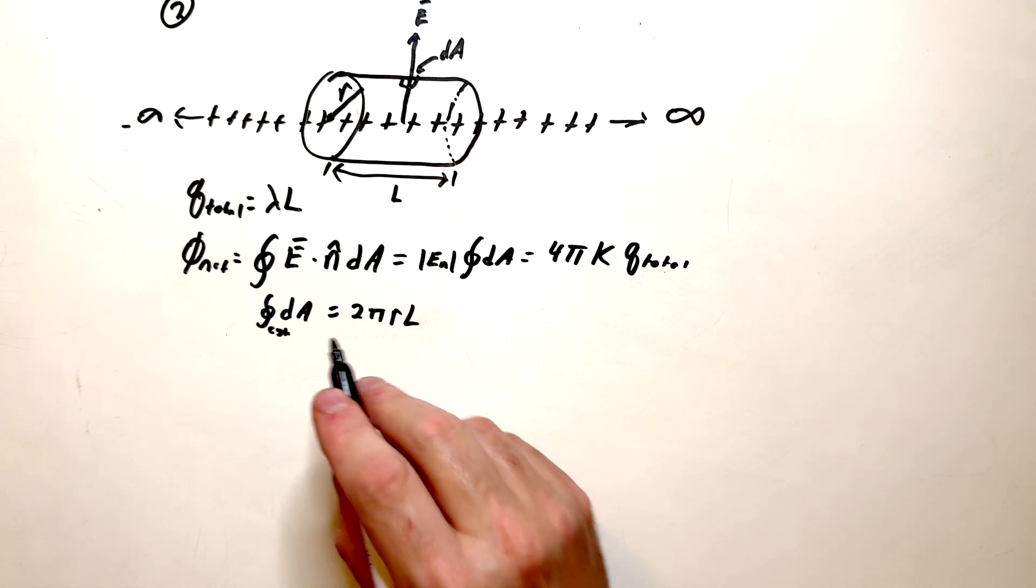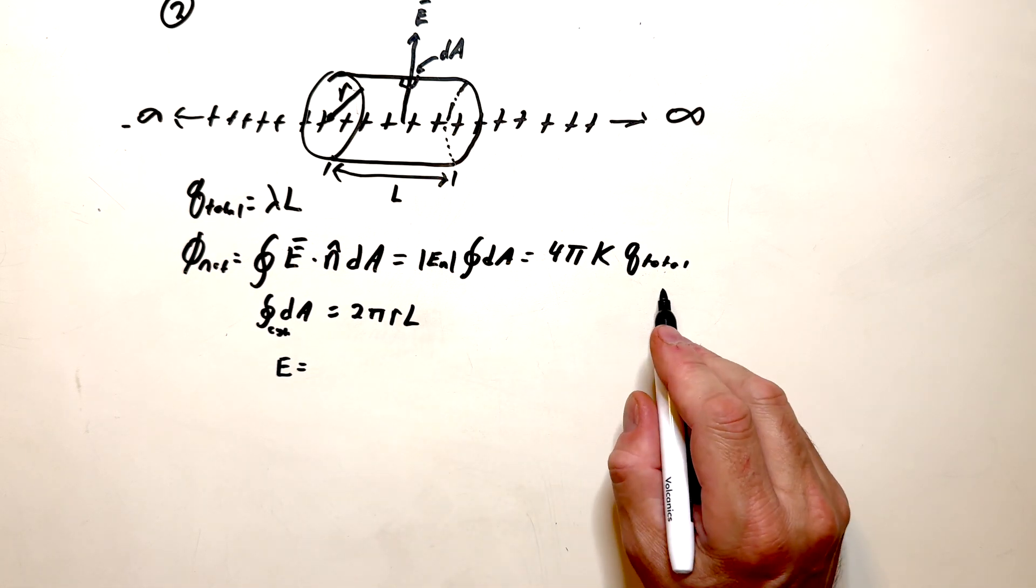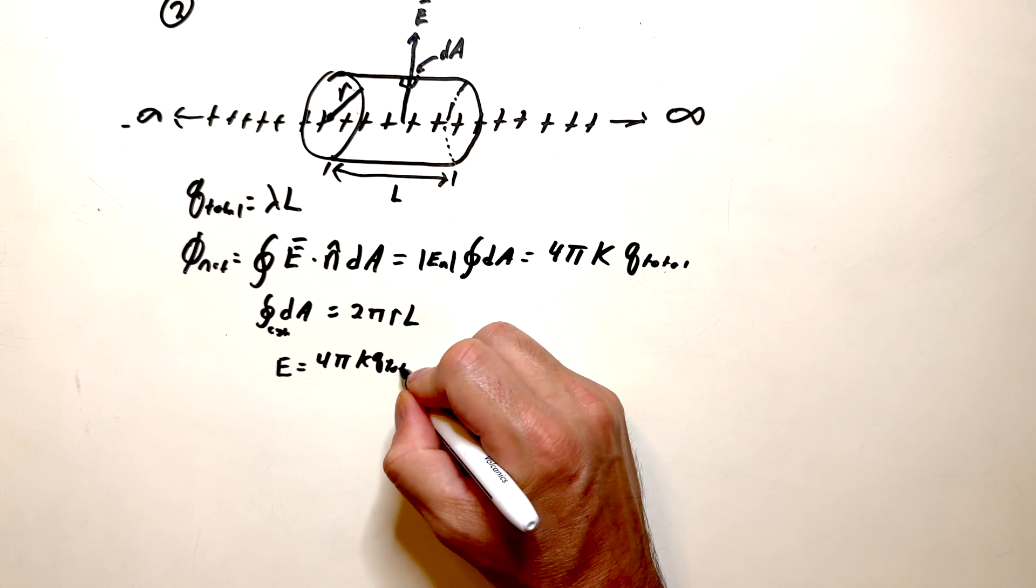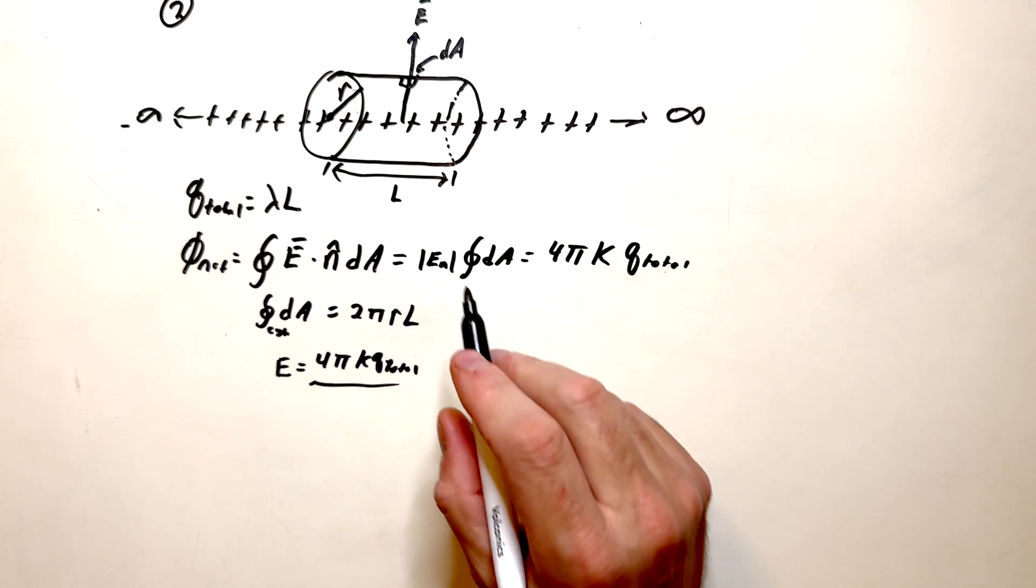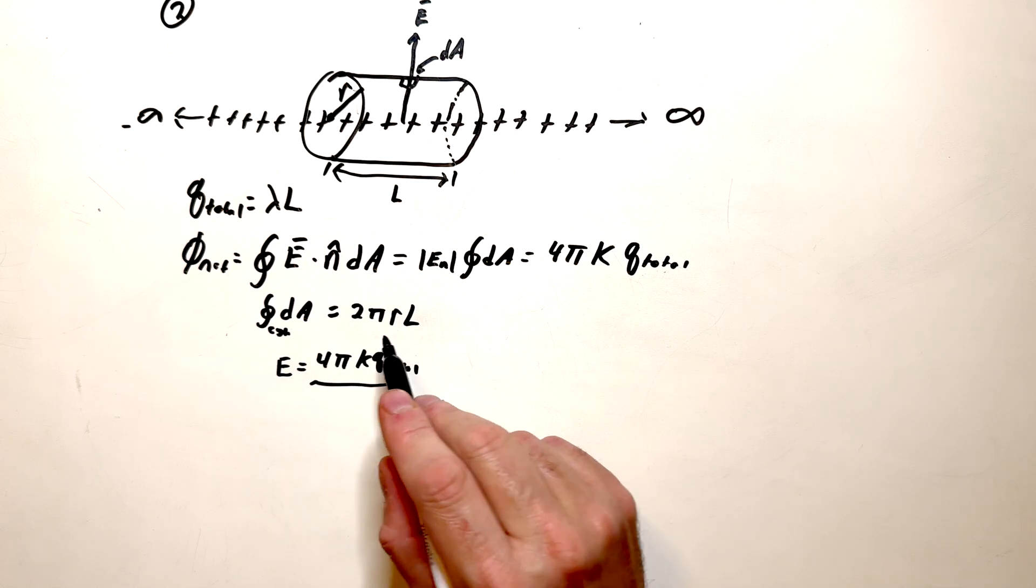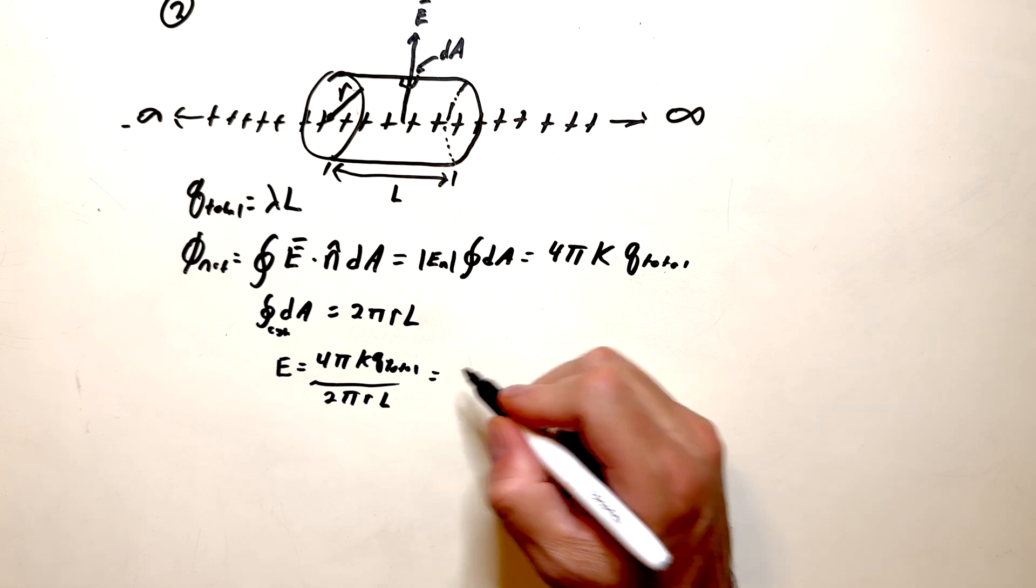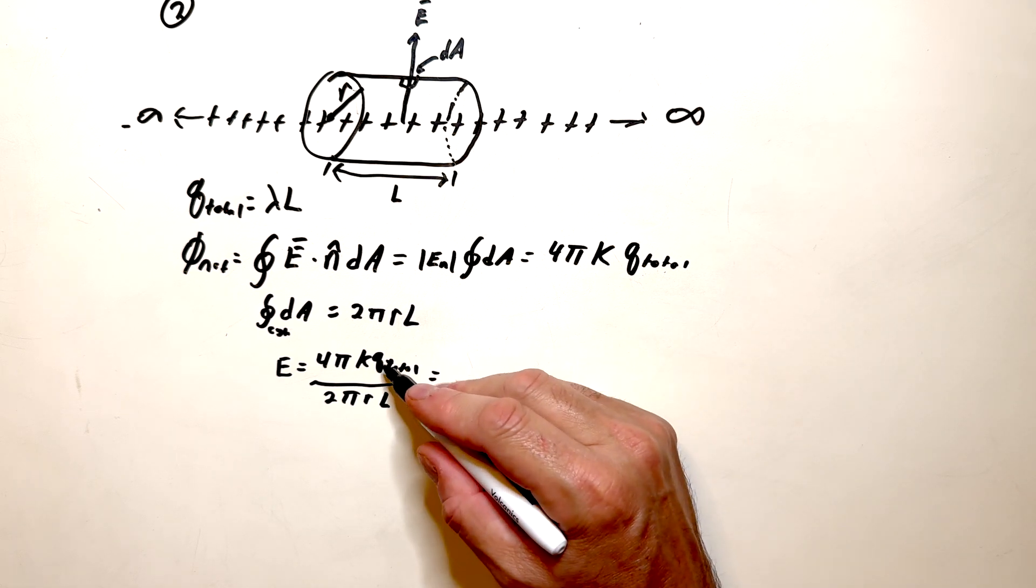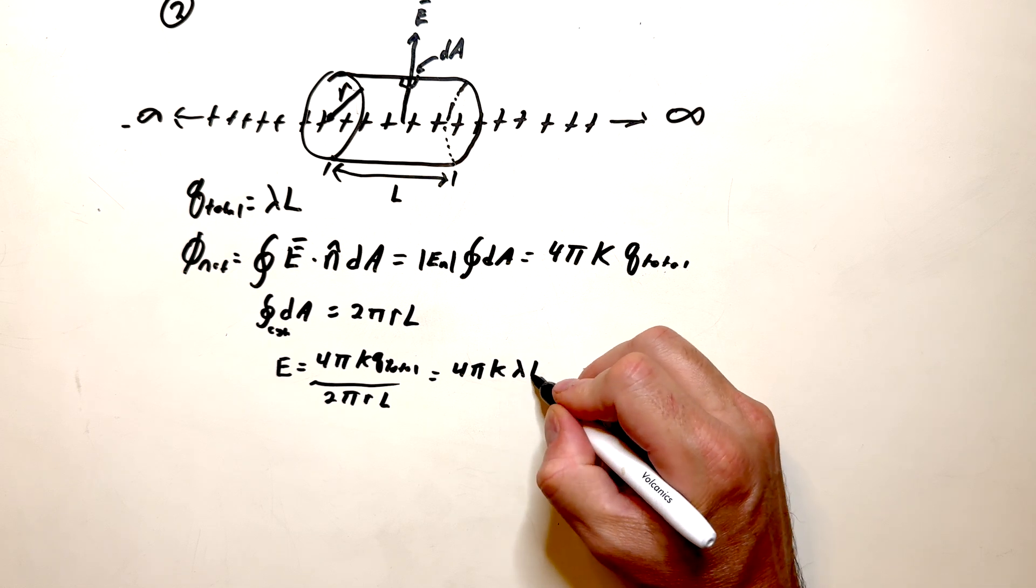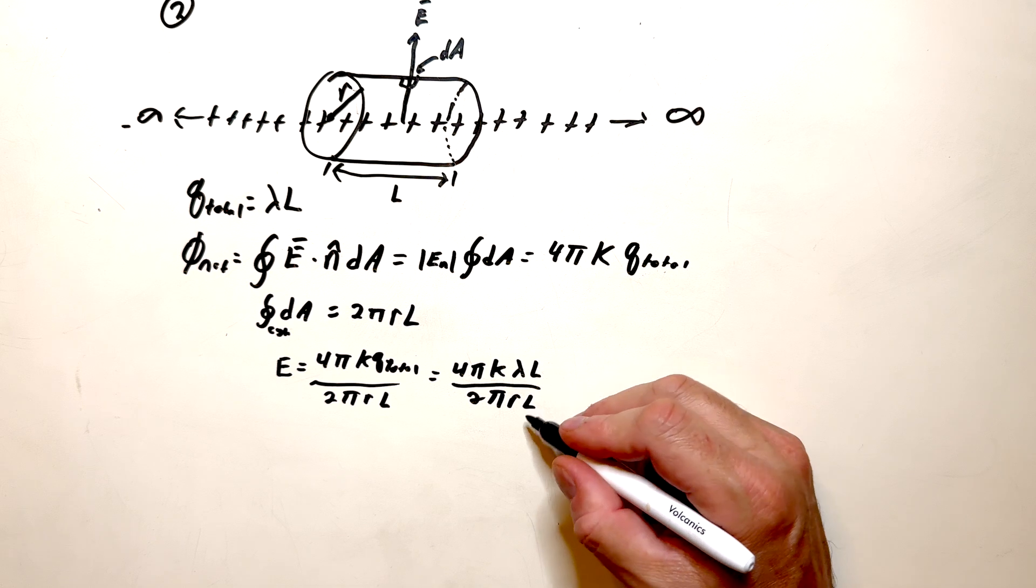So we can calculate the electric field as follows. E is equal to 4 pi k Q total divided by the integral of the area, which is 2 pi r L. I'm going to substitute in for Q total using lambda l. So 4 pi k lambda l divided by 2 pi r L. And you can see we're going to get some cancellations here. The l's will cancel. We've got a pi that's going to cancel. 2 is going to cancel, leaving 2 up here.